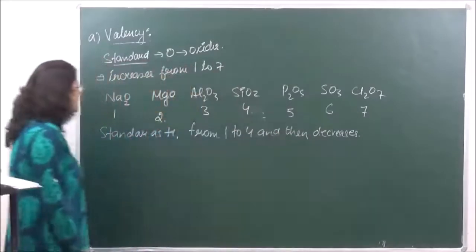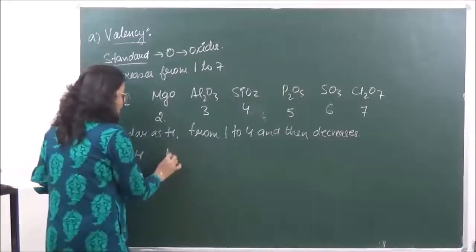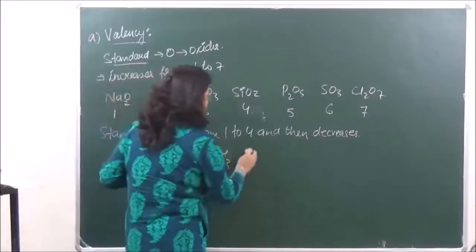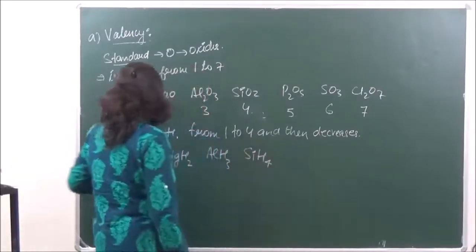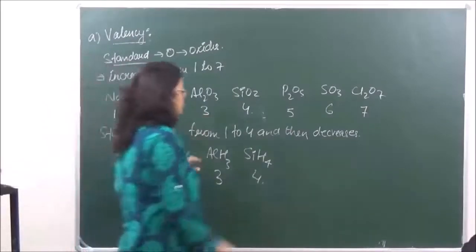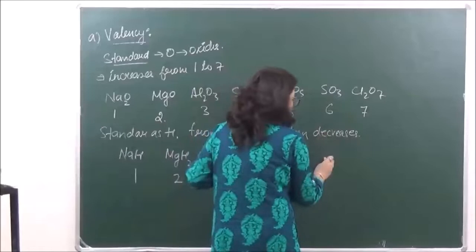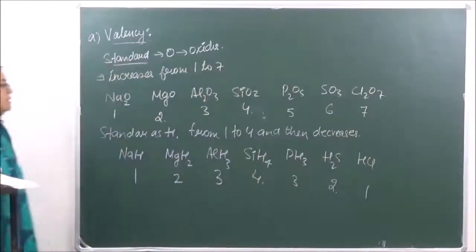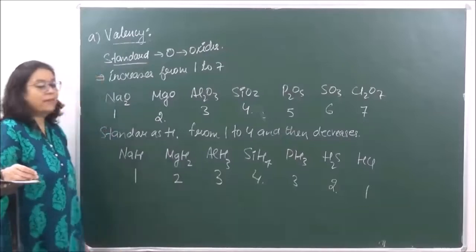If we take hydrogen as the standard, the valency increases from 1 to 4 and then decreases. For example, sodium hydride gives valency 1, magnesium hydride gives 2, aluminium hydride gives 3, and silane SiH₄ gives 4. But when we go to phosphorus, the oxidation state decreases to 3, and continues decreasing to 2 and then 1. So taking oxygen as standard, valency keeps increasing; but taking hydrogen as standard, it increases up to 4 and then starts decreasing.